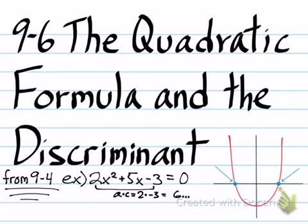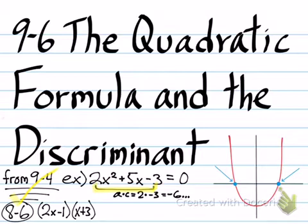So the method you would use to factor this specific example is where you would start off by multiplying a times c, and that would be a negative 6, by the way, not positive 6. And basically, you would factor, and you would get 2x minus 1, and then x plus 3. And by the way, factoring a trinomial like this comes from section 8-6. So if you have to go back and re-watch that video, please go do so.